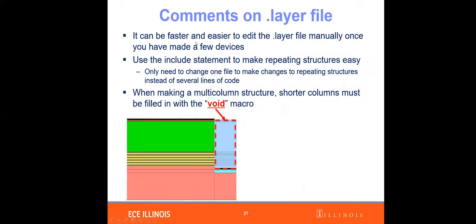It can be much faster and easier to edit the .layer file manually once you've built a few devices. Once you are familiar with the code and logic, you don't have to use the Layer Builder GUI. I used the include statement to make repeating structures easier, as with the GaAs.bar and GaAs.qw files. When you have multiple columns, if a layer in a column is not defined, you need to provide a void macro for that region — this is very important in 2D simulation.